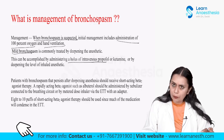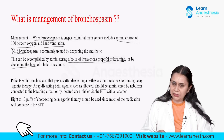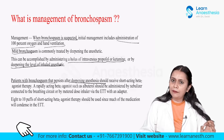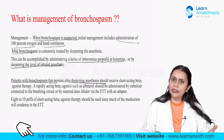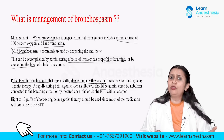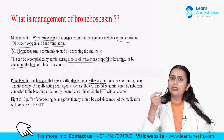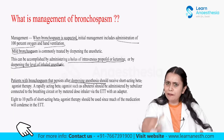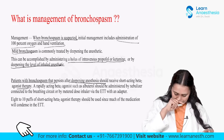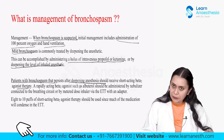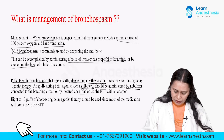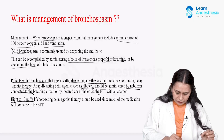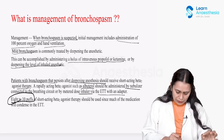Deepening anesthesia can be done with a bolus of propofol, ketamine, or by increasing the inhaled anesthetic. If bronchospasm persists after deepening, treat with SABA — short-acting beta-2 agonist. We give 4 to 8 puffs, or 8 to 10 puffs, of albuterol via nebulizer or MDI attached to the ET tube with an adapter, because a lot of drug deposits in the ET tube.